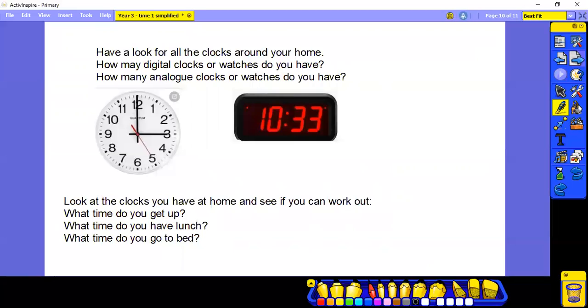So, have a look for all the clocks around your home. How many digital clocks or watches do you have? How many analogue clocks or watches do you have? Look at the clocks you have at home and see if you can work out what time do you get up? What time do you have lunch? And what time do you go to bed?